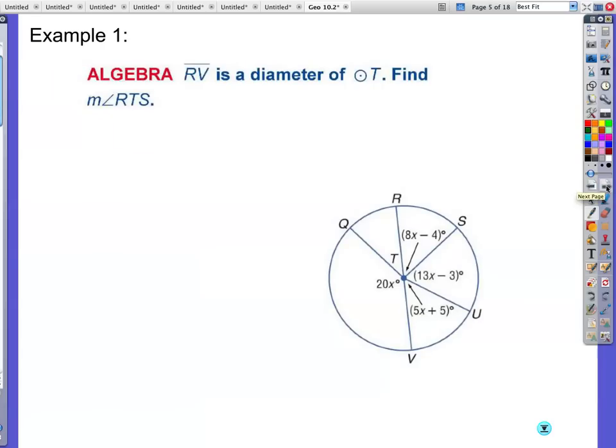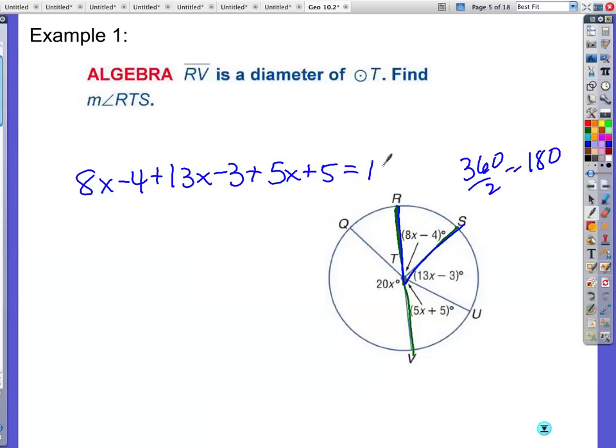Example one, segment RV is a diameter of circle T. So this is my diameter. Find the measure of angle RTS. So let's see, RTS is this angle right here. And this angle is a central angle. But we have to use what we know. If this is a diameter and there's 360 degrees in a circle, a diameter cuts your circle in half. All three of these add up to 180 degrees. Right? Because there's 360 divided by 2. That's your 180. All right.